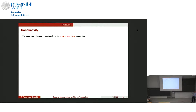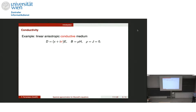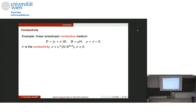The second example is when conductivity plays a role. You can imagine a medium with some conductivity, which implies that the electromagnetic wave, when it interacts with this medium, will lose some energy because some of it is absorbed. This is modeled by assuming the dependence of D on E is via epsilon plus i*sigma, where sigma is the conductivity. This is an L-infinity function with values in symmetric matrices. We also allow sigma to touch zero, since the case where sigma equals zero is the most interesting — the self-adjoint Maxwell case.